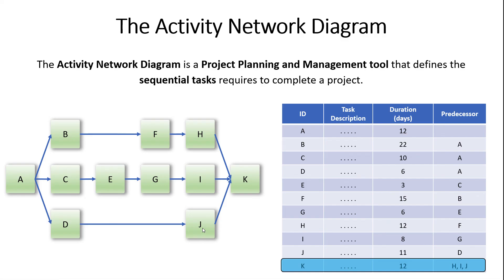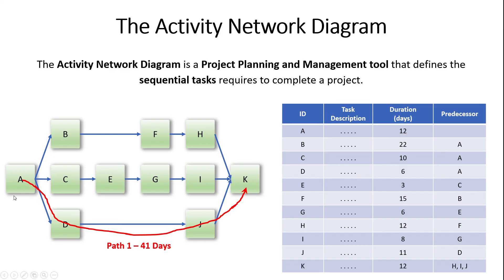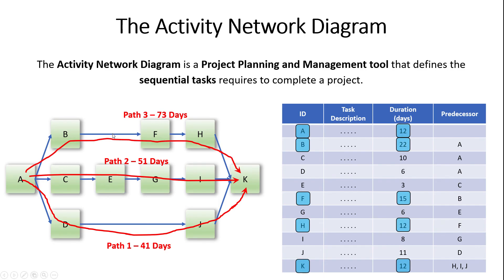Once we've laid this all out, we can start talking about the critical path — which activities are most critical to completing the project on time. This diagram has three different paths. Path one covers tasks A, D, J, and K and takes 41 days. Path two takes 51 days. The third and final path — which is the critical path — is tasks A, B, F, H, and K, taking 73 days. So if your boss asks how long the project will take and what the most important tasks are, the answer is tasks A, B, F, H, and K. Those are the ones that cannot slip and that define the completion date: 73 days.